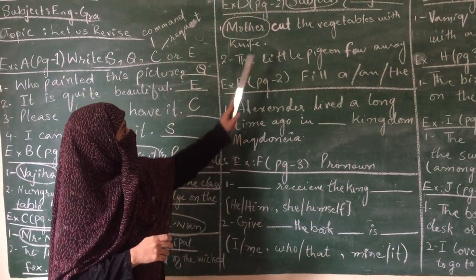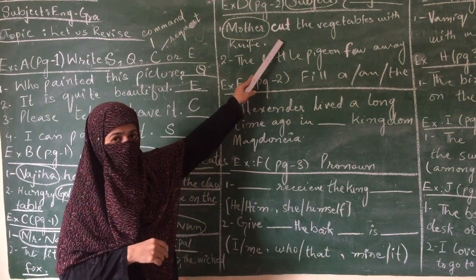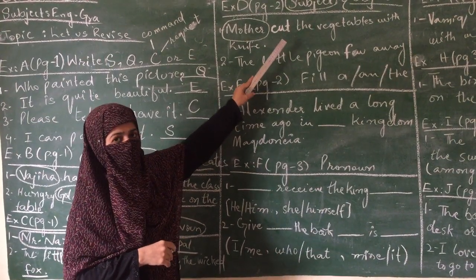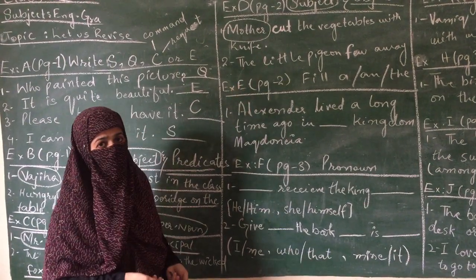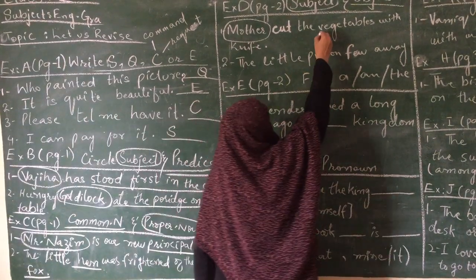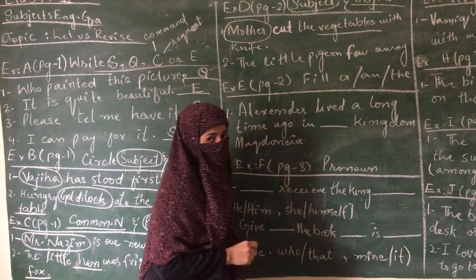Mother, what did she do? She cut. The verb is cut, meaning the action she is doing is cutting. What did she cut? Vegetables. So this is our object. We underline it.